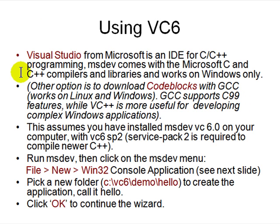Visual Studio comes with the Microsoft C/C++ compiler and library and works on Windows only. You also have the option to download Code::Blocks with GCC, which works on Linux and Windows. GCC supports C99 features, while MSVC is more useful for developing complex Windows applications.